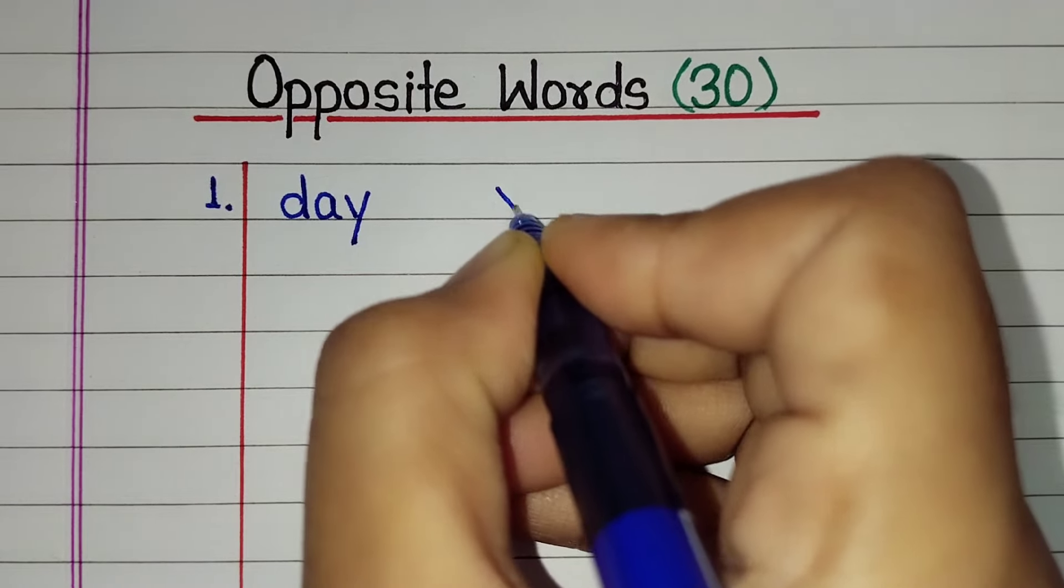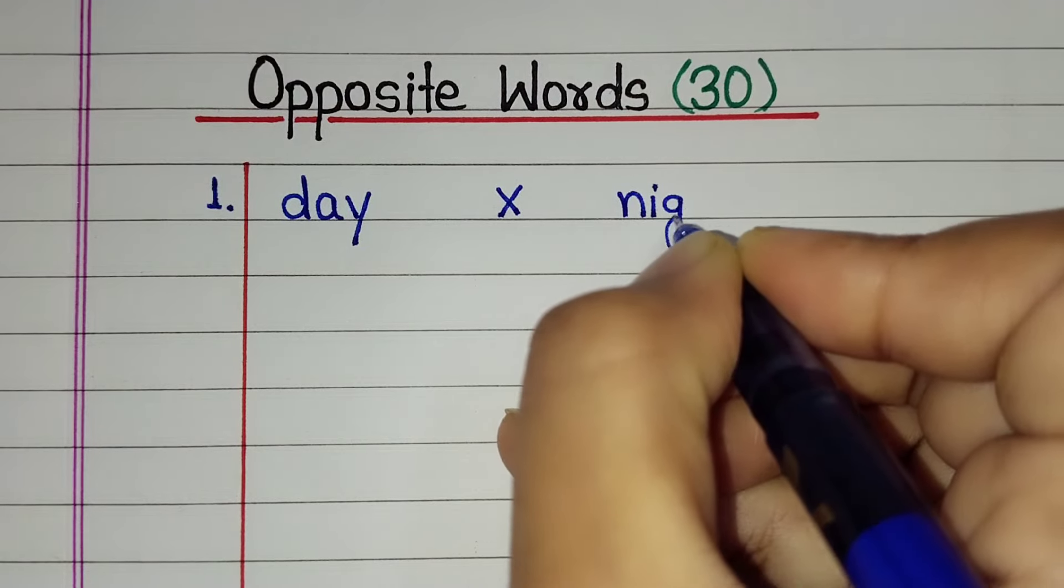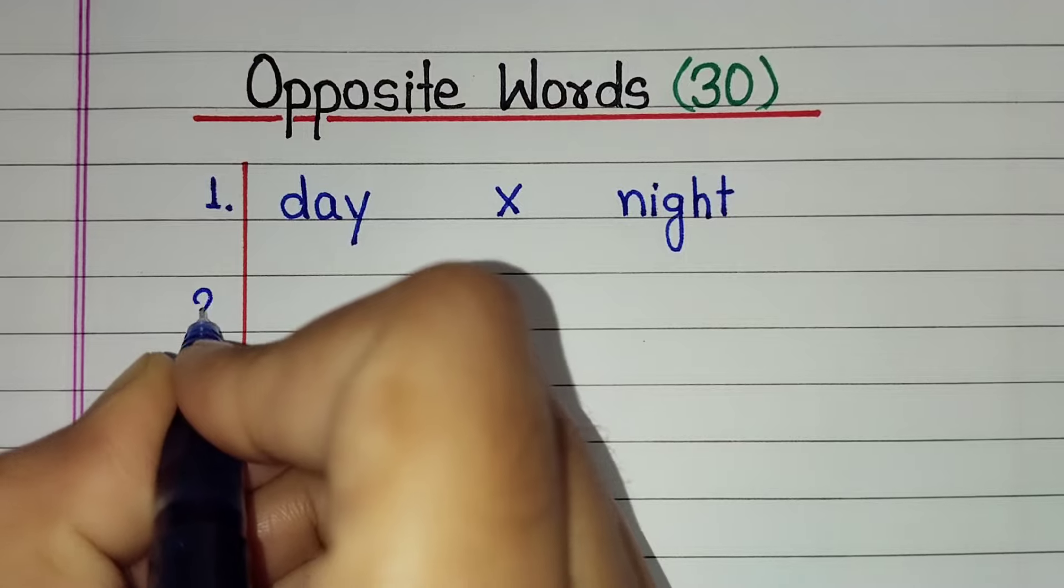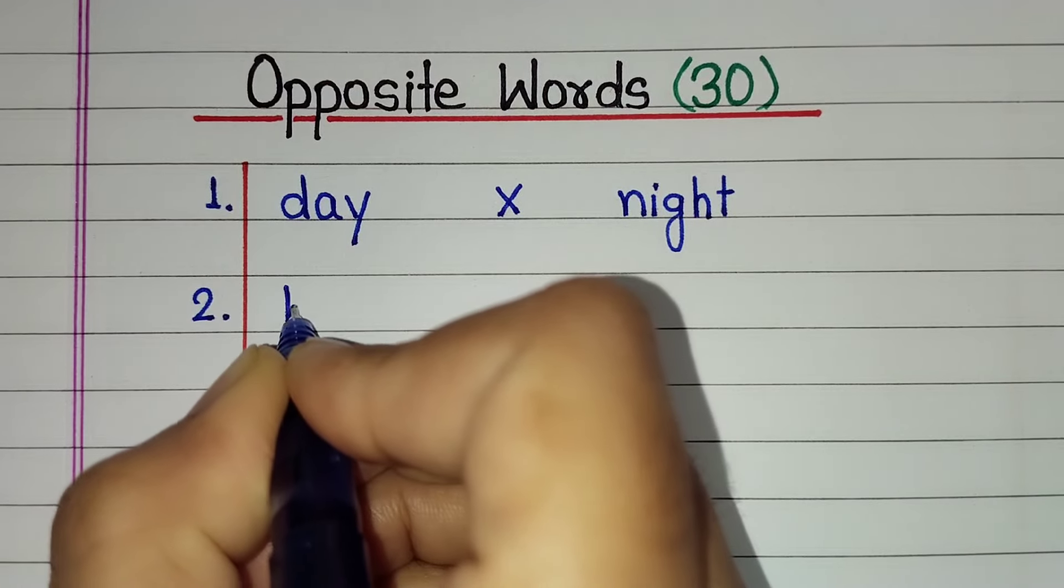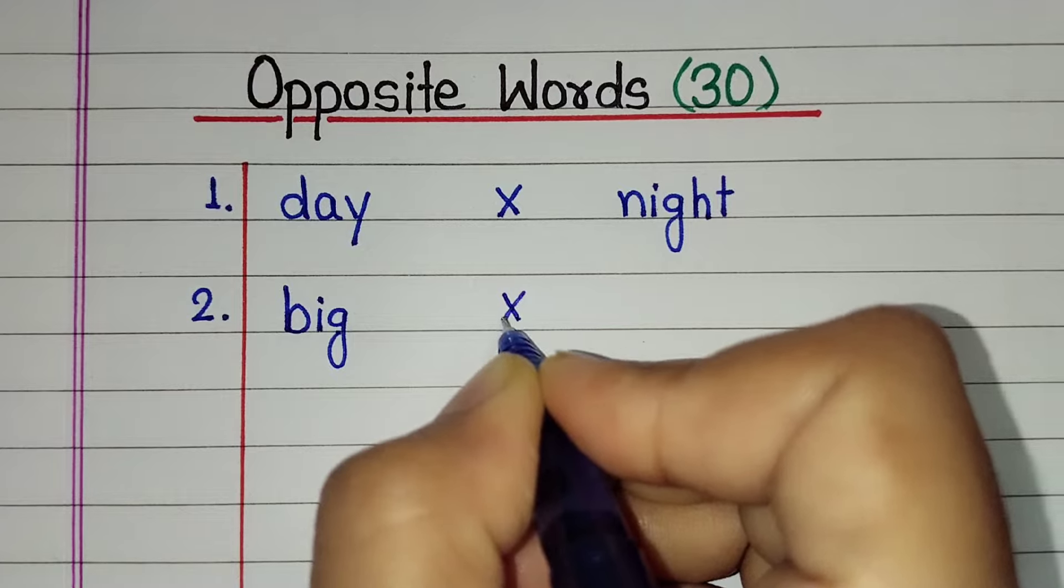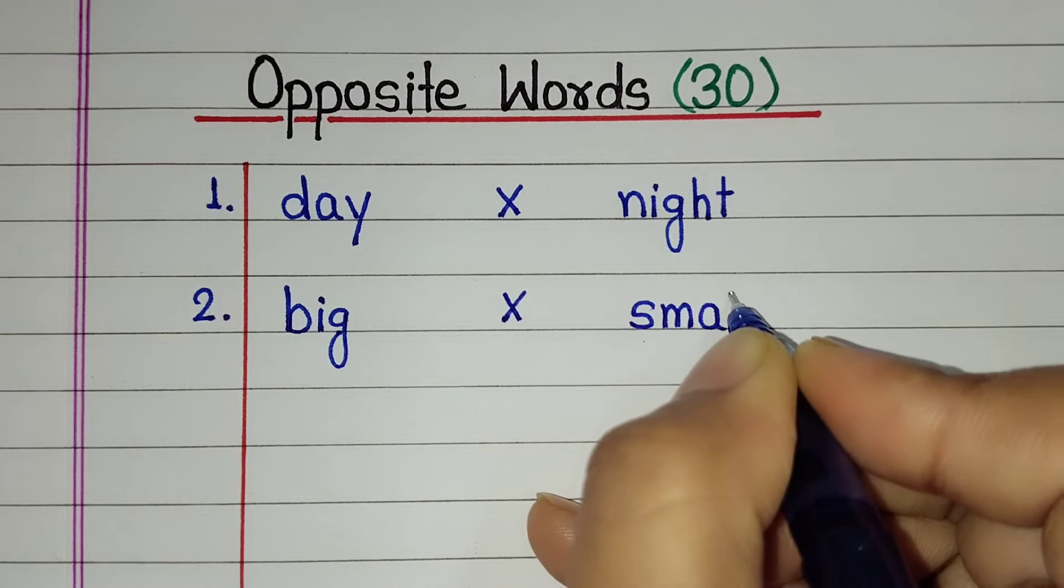Day. Opposite of day is night. Big. Opposite of big is small.